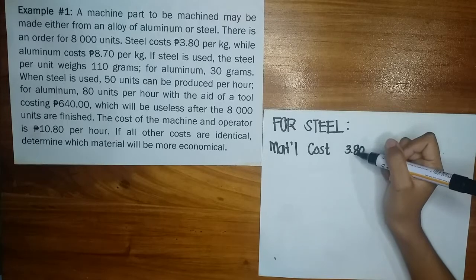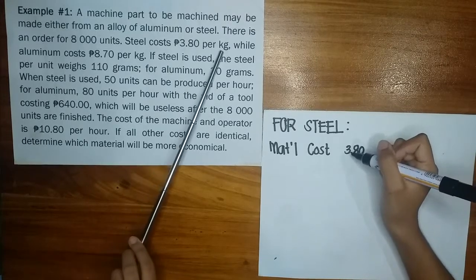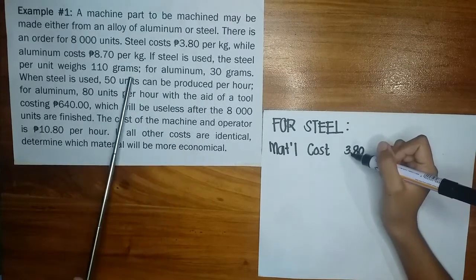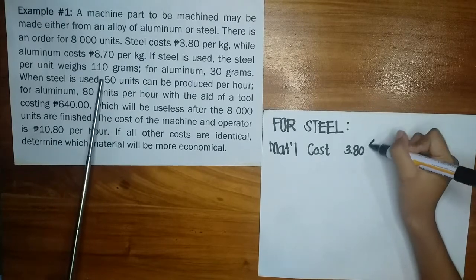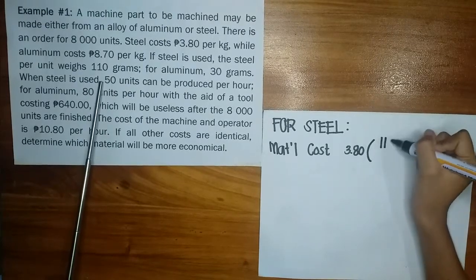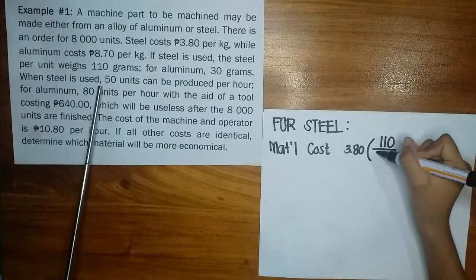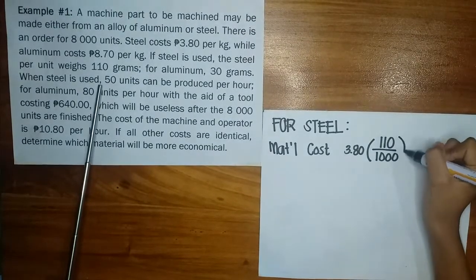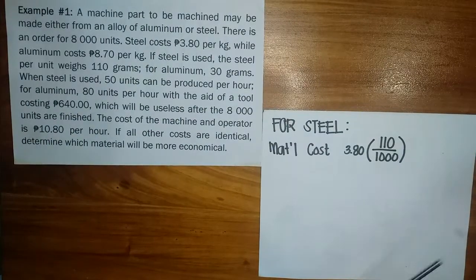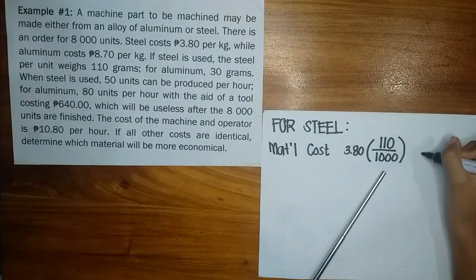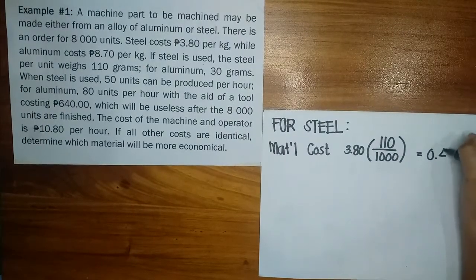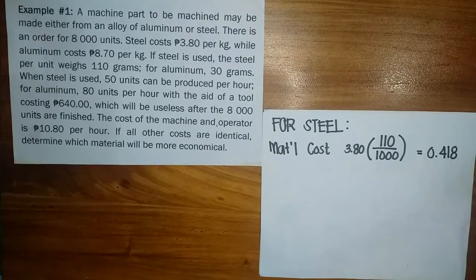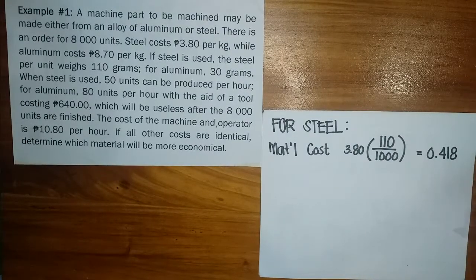But that is per kilogram, and the steel per unit is only 110 grams. So since it's in grams, let's convert to kilograms — divide 110 by 1,000. So when multiplied, we have 0.418. So we're done with material cost.